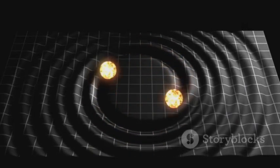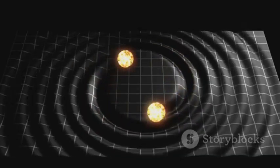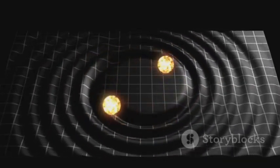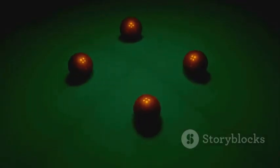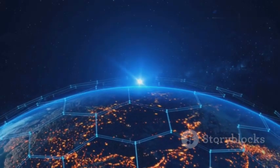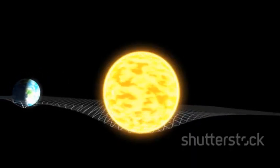General relativity describes gravity not as a force but as a curvature of space-time caused by the presence of mass and energy. Imagine a bowling ball placed on a stretched rubber sheet. The ball creates a dip in the sheet and any object rolling nearby will be deflected towards the ball. Similarly, massive objects like Earth warp the fabric of space-time around them.